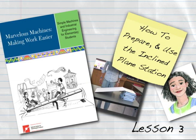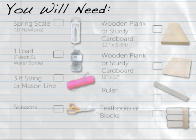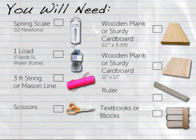To construct one inclined plane station for your classroom, you will need one set of materials common to all the simple machine stations: one spring scale measuring 10 newtons, one load that weighs approximately one to two pounds such as a filled half liter water bottle, at least three feet of string or mason line, and a pair of scissors.